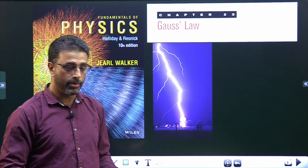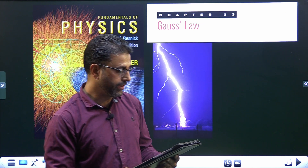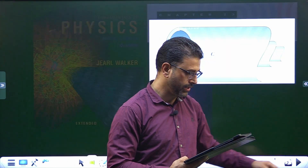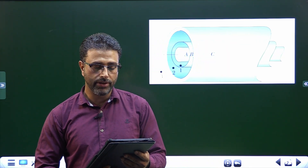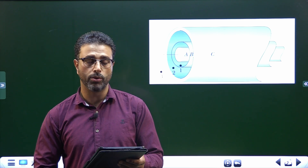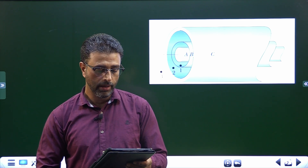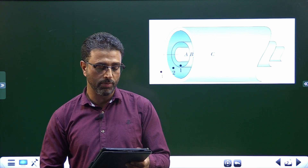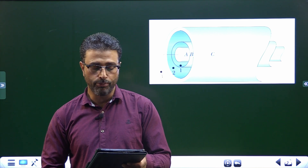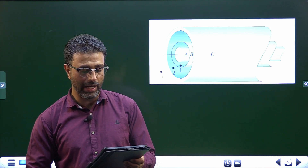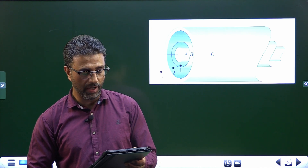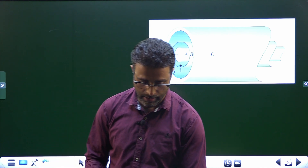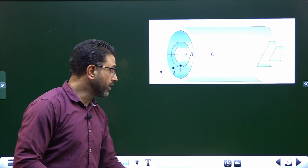Chapter 23, question number 11 on Gauss's law. The figure shows a section of three long charged cylinders centered on the same axis. The central cylinder A has a uniform charge QA equal to plus 3Q₀. We need to find what uniform charges QB and QC should be on cylinders B and C so that, if possible, the net electric field is zero at point 1, point 2, and point 3.